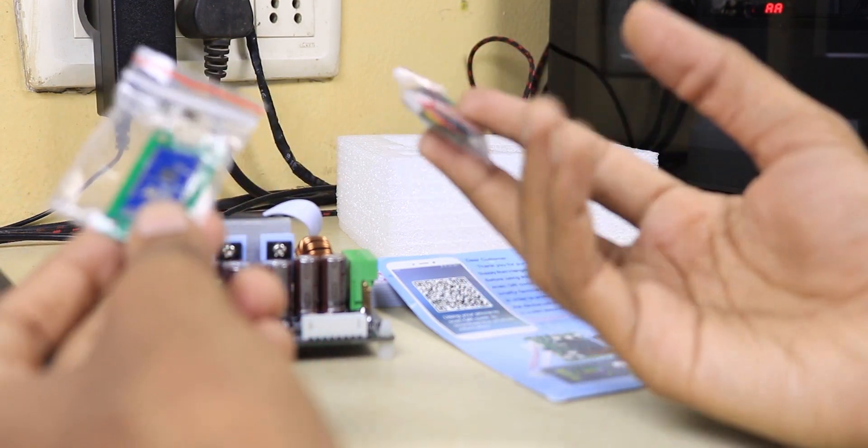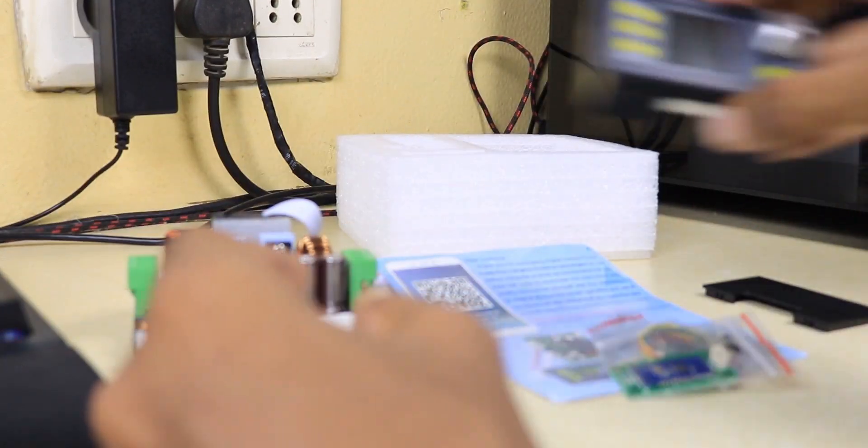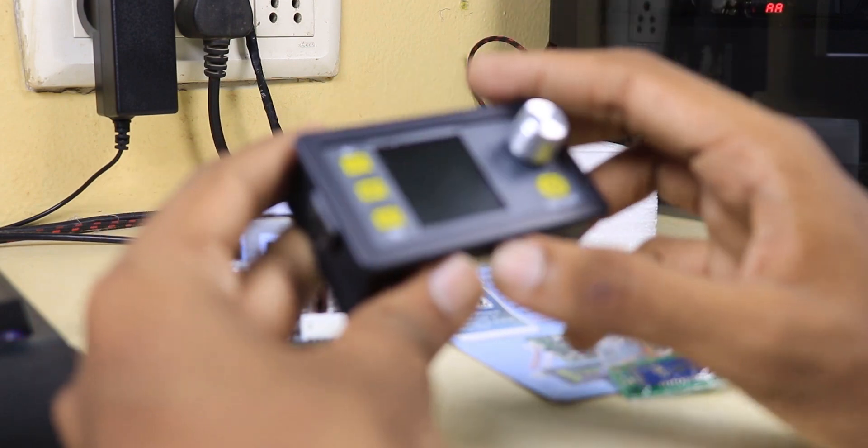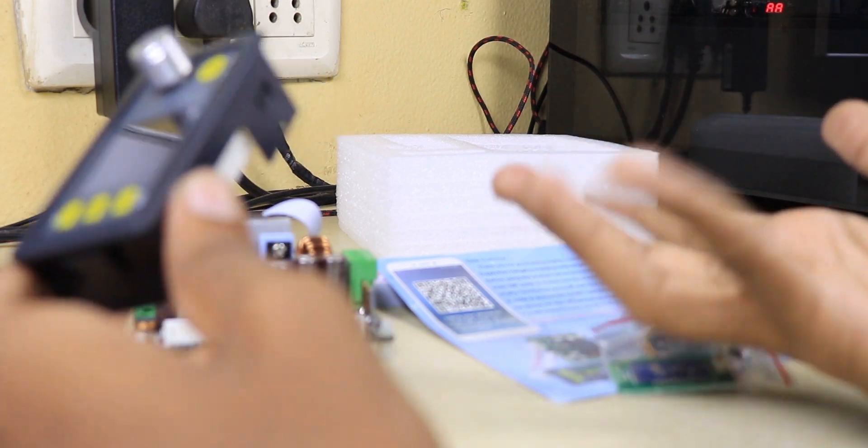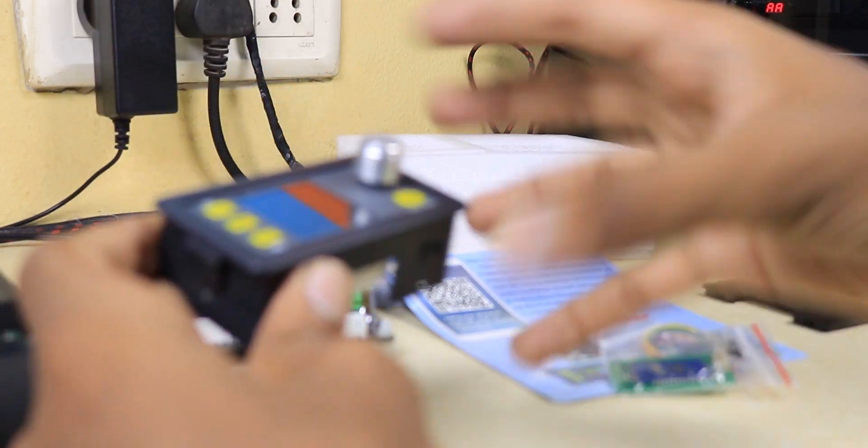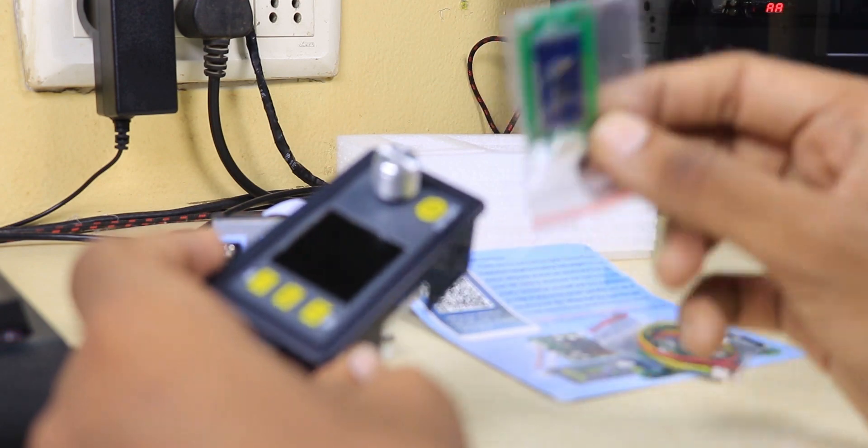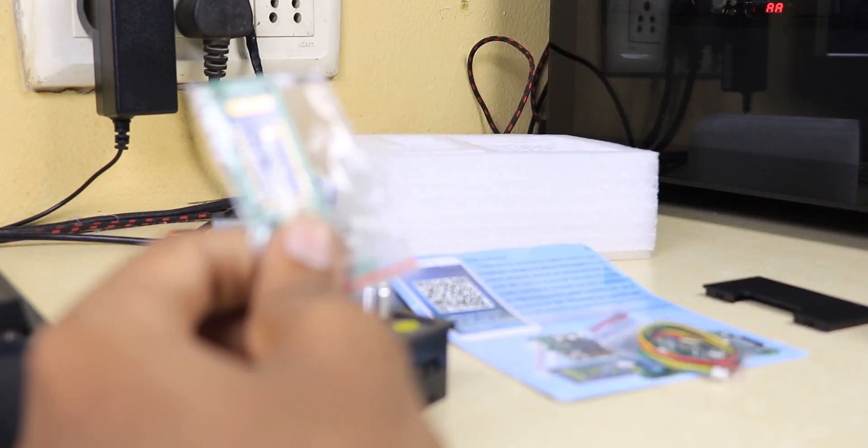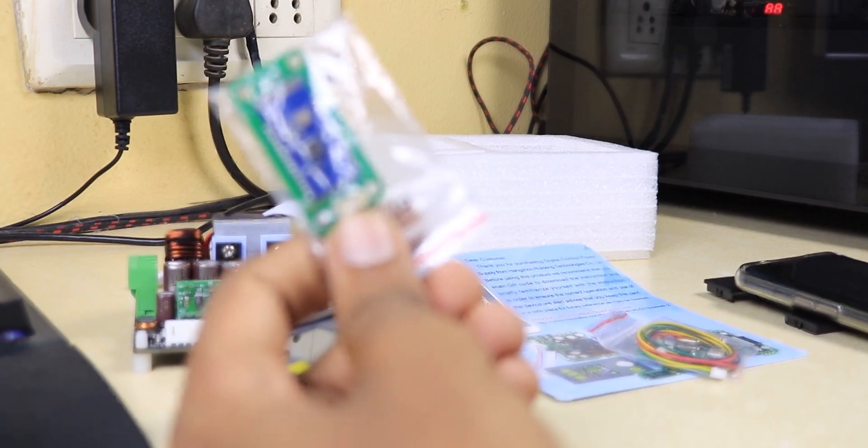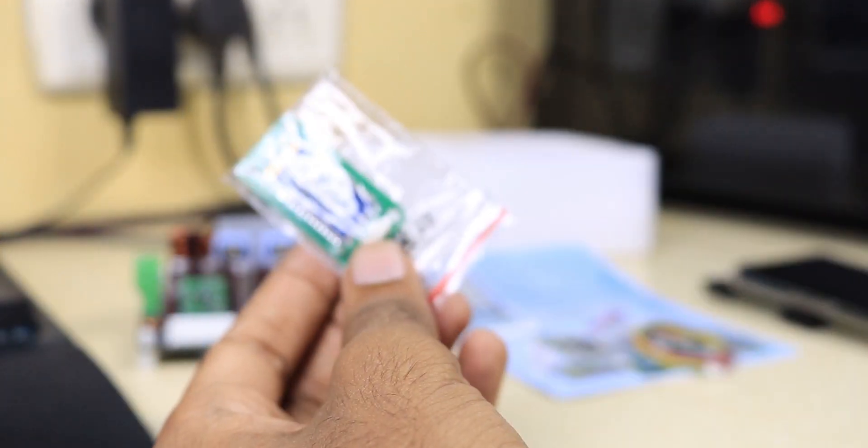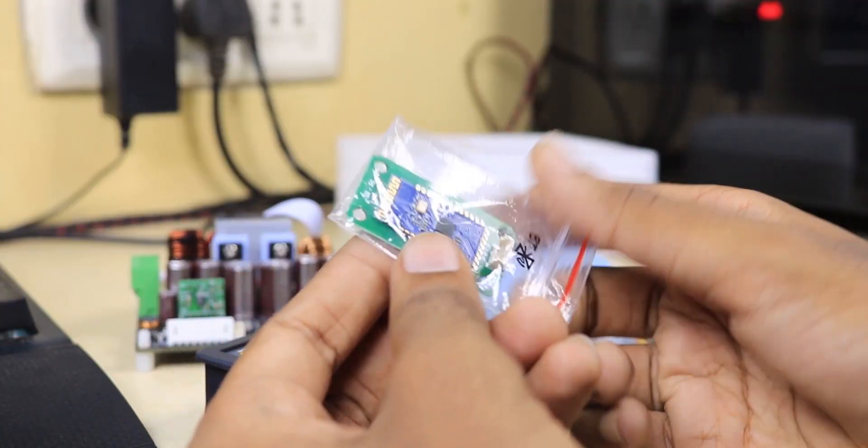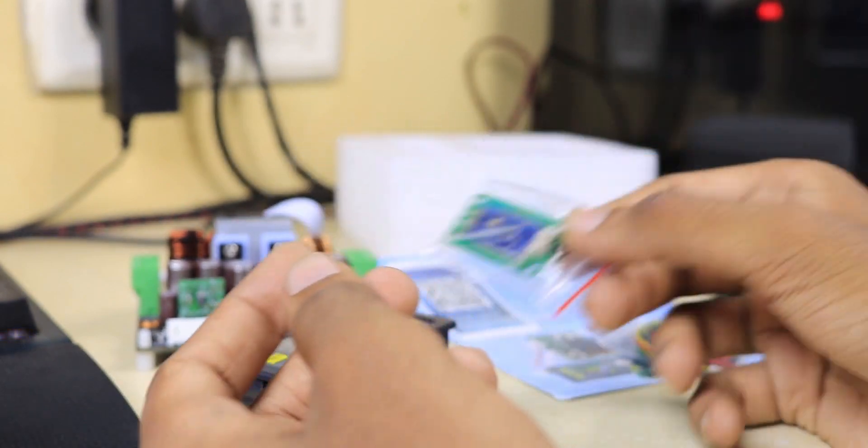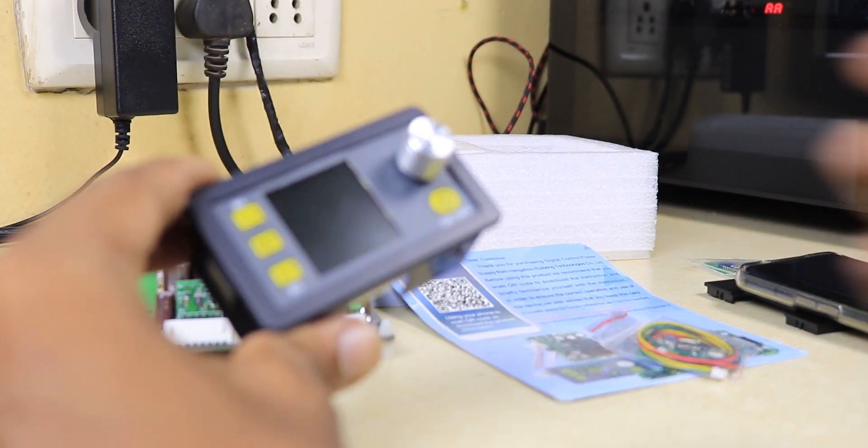The app basically lets you control everything you can do with the display through your phone via Bluetooth. It's a nice feature, but I don't find it practically usable. If you're using Bluetooth you'll have barely 10 meters range, or maximum 50 meters with Bluetooth 5.0. Why would you want to do that when you can just do it manually? But yeah, it's nice to have.